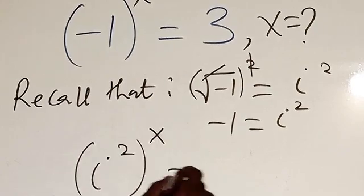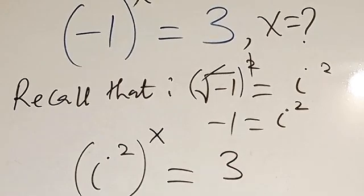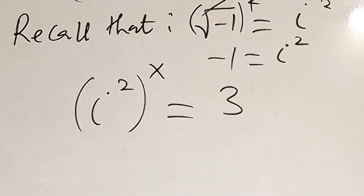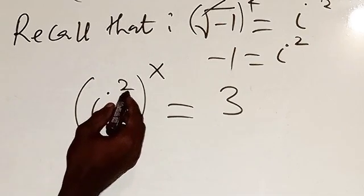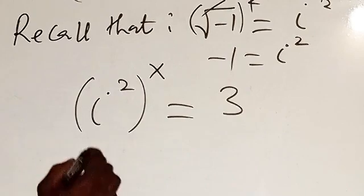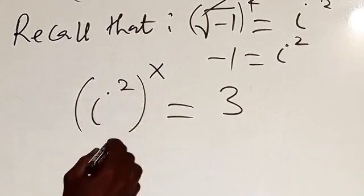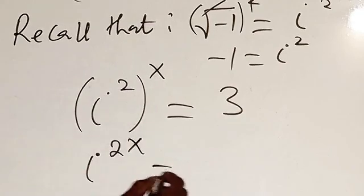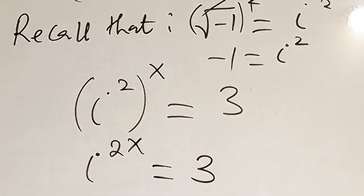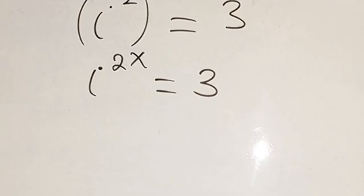Raised to power x equals what? Equals three. Are you following? So now from there, this x and these two would multiply. We have i then two to the power of x, because two multiplies the power outside. We have what? We have three. So what we are going to do is to introduce...